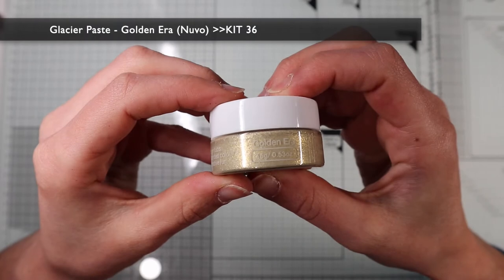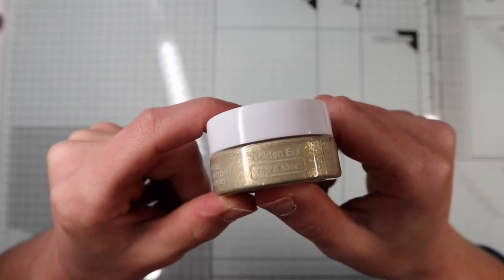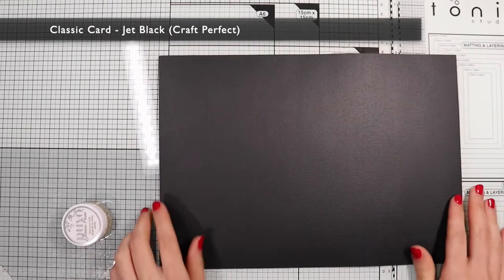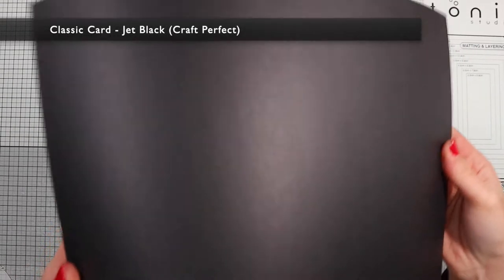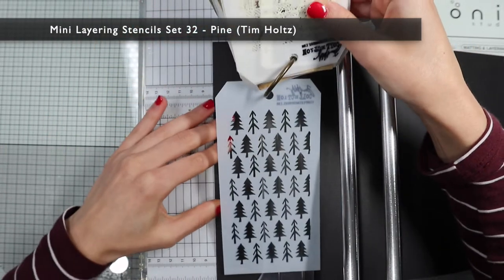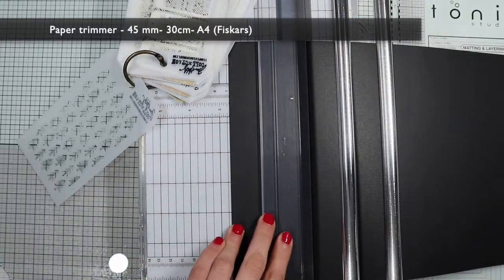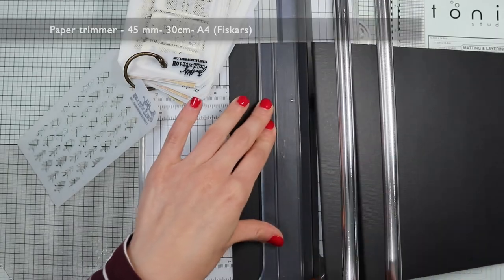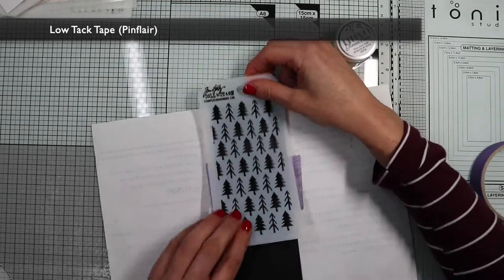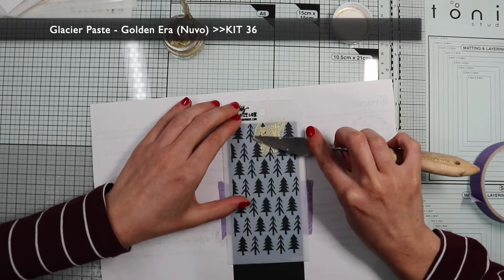One way to use the glazier paste is to apply it with the stencil technique. In particular, for this card I show you how these texture pastes are wonderful on a black background. I'm going to use this stencil by Tim Holtz with a pine tree. First, I make a banner out of black cardstock. Then I fix the stencil with low-tack tape adhesive. And I proceed to spread the glazier paste with a spatula.